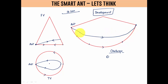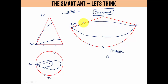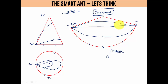Some may say the ant can travel this way also, and in the development it would appear something like this — but we need to make sure this is the initial position and this is the final position. In order to ensure the ant travels the minimum distance, the ant must travel in the form of a straight line in the development, and only then can we say the ant has taken the shortest path.